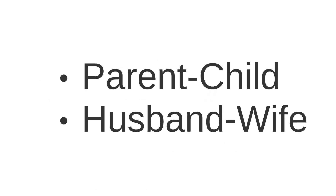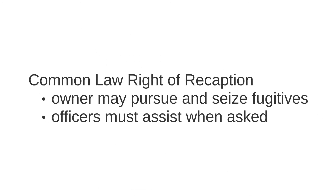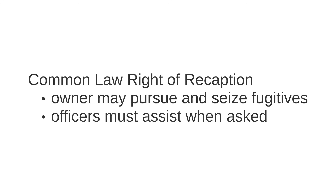It was a largely unwritten law that governed personal relations. The right of recaption meant that the master had a right to seize the servant, wherever he found him, and forcibly return him to service. The only restriction on this was that the master not breach the public peace. It is worth pointing out that the authority of the master over the servant and the right of recaption applied to wives and children as well as masters and servants. Absconding children and wives could be pursued by the paterfamilias and seized by him. Local authorities would be obligated to help the master retrieve his servant, the husband his wife, or the father his child. This was a common law right, and as such was part of the unwritten law, and it was very widely enforced.